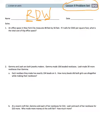So let's dig into number one. Number one, an office space in New York City measures 48 feet by 56 feet. If it sells for $565 per square foot, what is the total cost of the office space? So throughout module two, we've been doing a ton of multiplication. So I'm assuming that you guys, oh, Cal wants to play here. It's okay, buddy. It's okay. It's okay. We're going to multiply. Well, first of all, let's not even think about multiplying first. Let's think about drawing the best square I can right now.